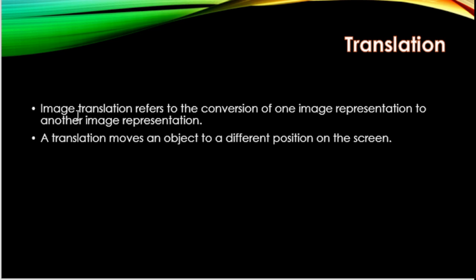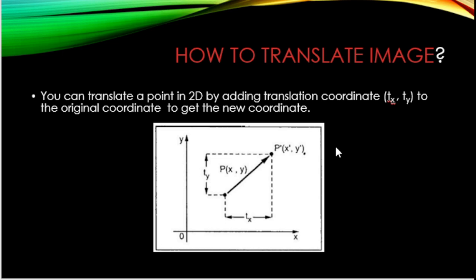Translation in image processing refers to conversion of one image representation to another. Translation moves an object to a different position on the screen. How can we translate an object or an image?